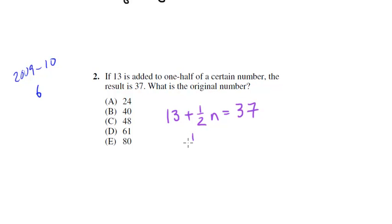What is the number? So subtract 13 from both sides, we get 1 half n is 24, or n is 48, which is choice C.